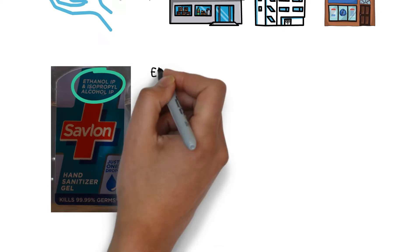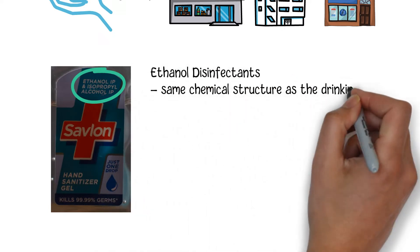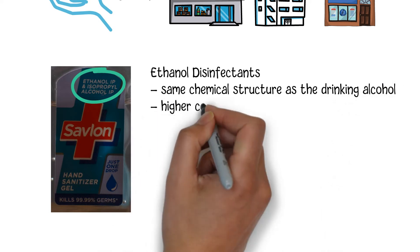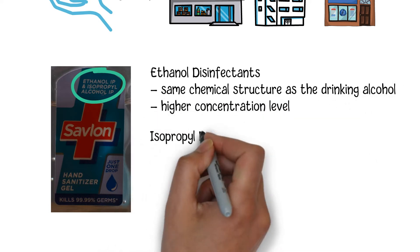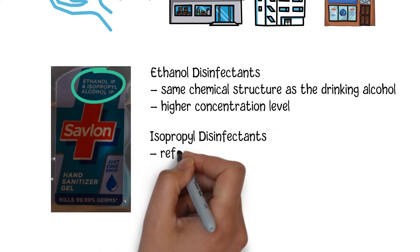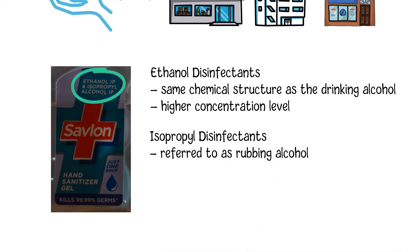Ethanol used in disinfectants has the same chemical structure as drinking alcohol, but at a higher concentration level. Isopropyl alcohol is also referred to as rubbing alcohol. Both types of alcohol can be effectively used to kill a wide range of bacteria, viruses, and fungi at the right concentration levels.